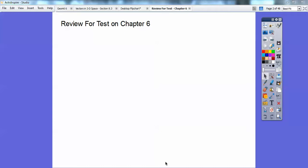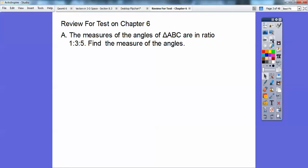Hey folks, this is Ernest T. Bass, and this is a review for your geometry test on similar figures. Okay, so here we go. The measure of the angles of triangle ABC are in the ratio of 1 to 3 to 5. Find the measure of each angle.